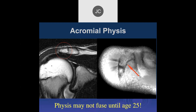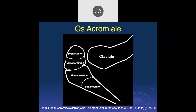Os acromiale can be a cause of impingement. Remember this physis may not fuse until age 25. The ossicles have been divided into different types depending on how large the ossicle is. The speaker generally just describes the os acromiale and the degree of degenerative disease at the syndesmosis in reports rather than using the specific type terminology.